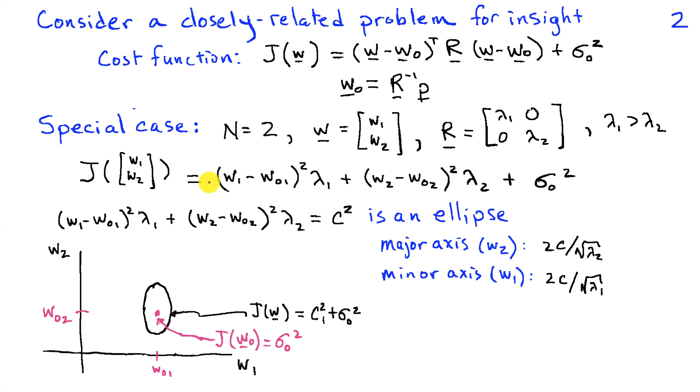We know that the minimum value of the cost function, or the minimum height above the plane, is sigma zero squared. And we get that when we set W1 equal to W01 and W2 equal to W02.